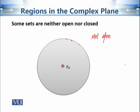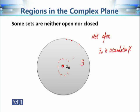Now let's see why the punctured disk is also not closed. A closed set must contain all its accumulation points. The center point Z0 is an accumulation point of this set because every punctured neighborhood of Z0 contains elements of S. However, Z0 is not contained in S. Since S does not contain all its accumulation points, S is not closed.